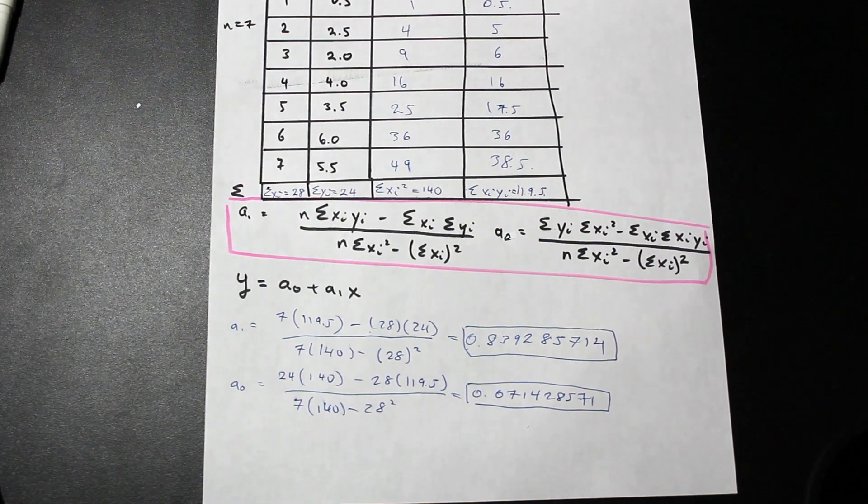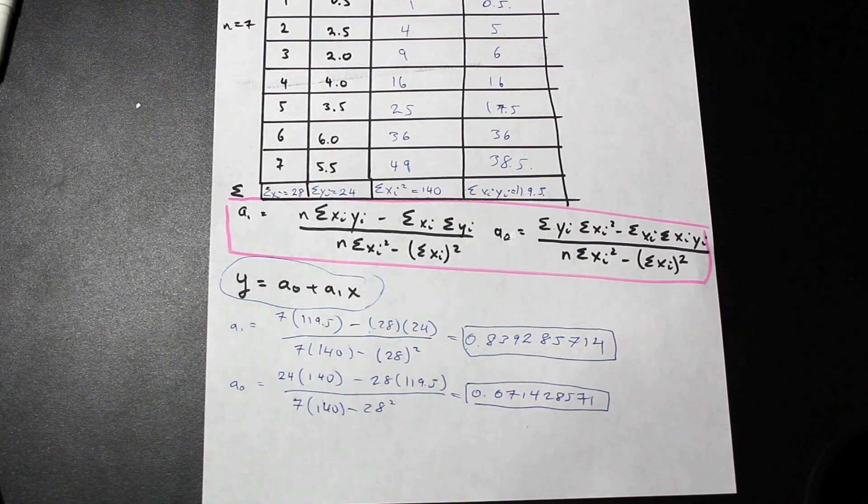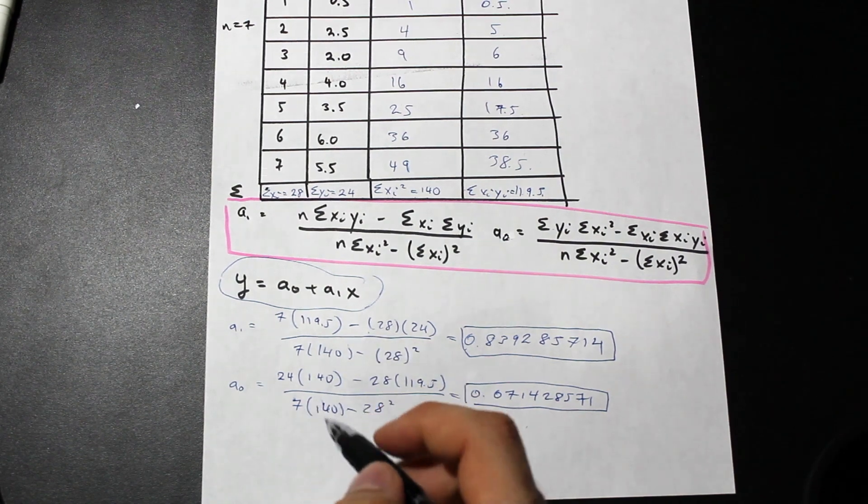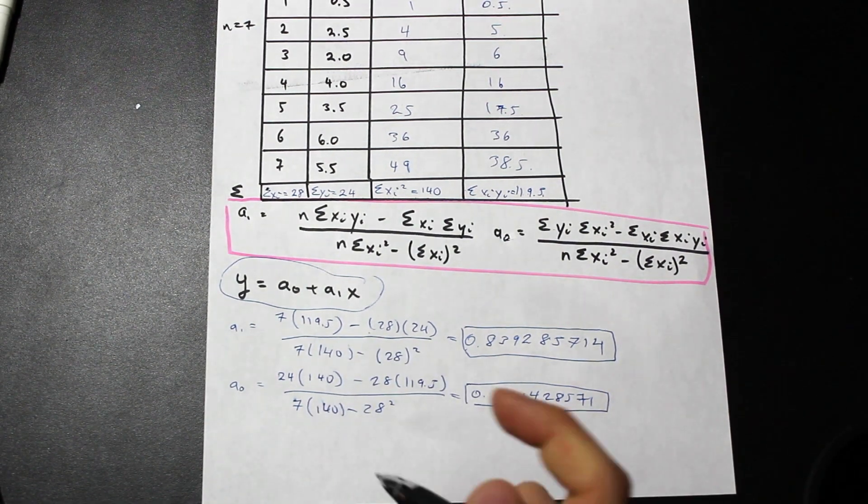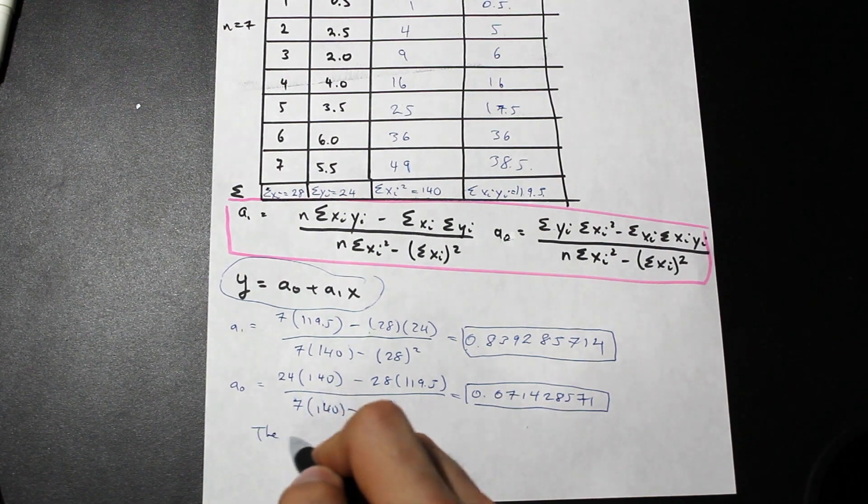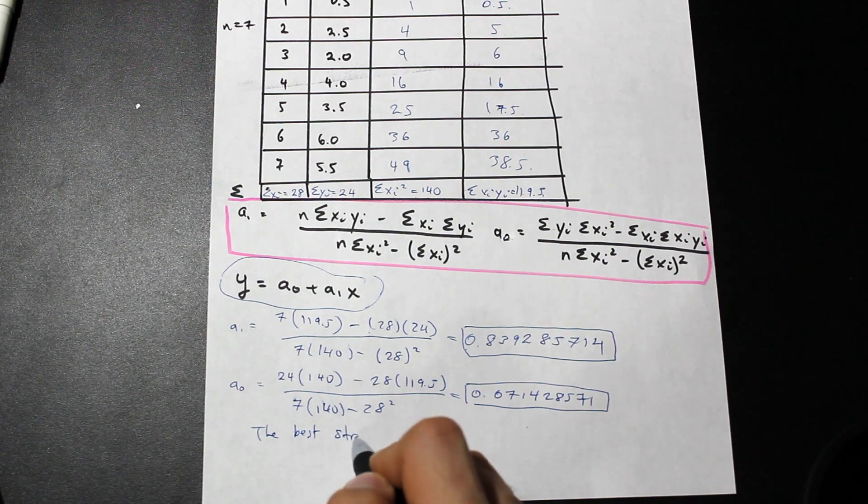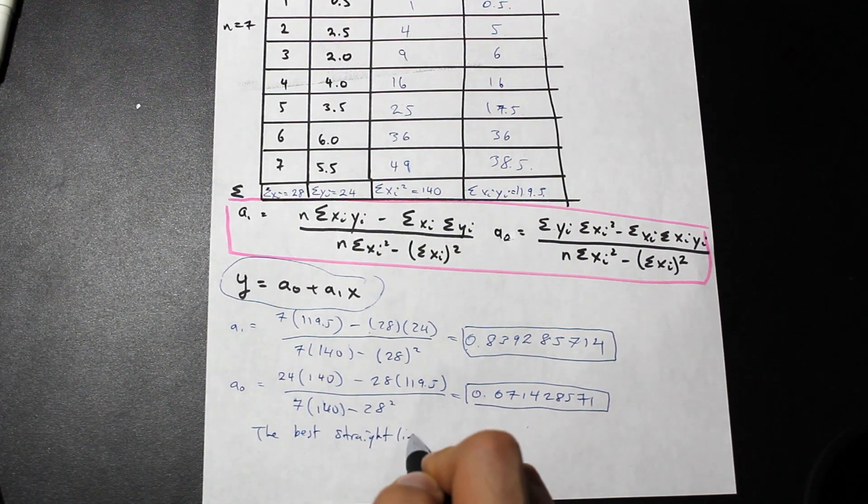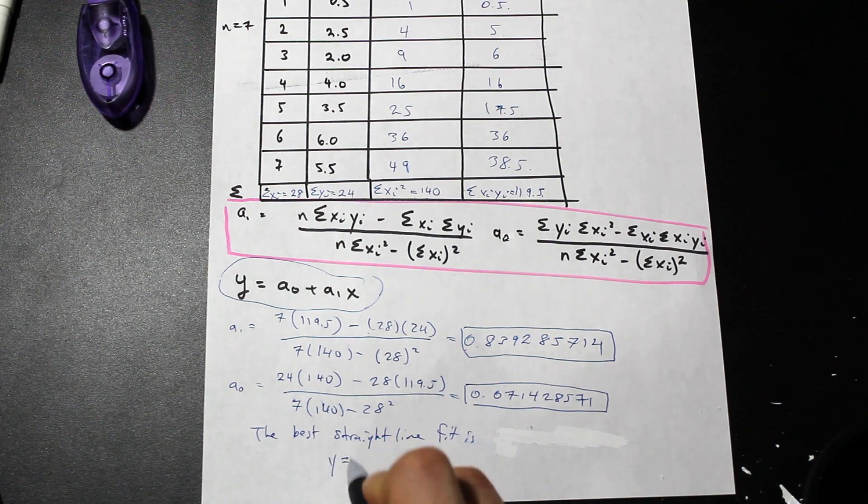Now the last step is simply to go ahead and plug into our formula here. And that is going to give us our best straight line fit. In this course, it's always best to give a little bit of a word answer at the end. We can say the best straight line fit is, we have y is equal to a naught.